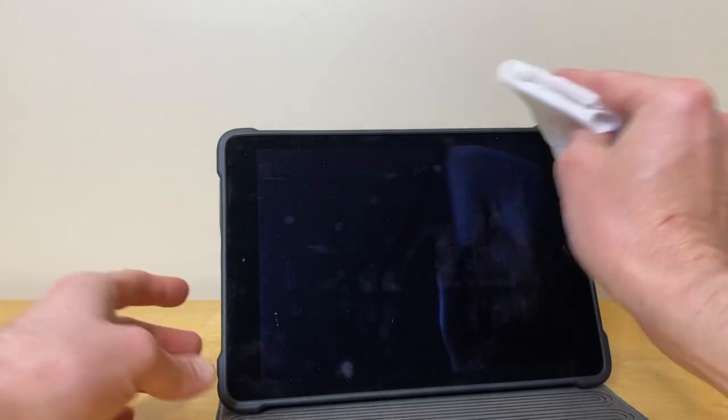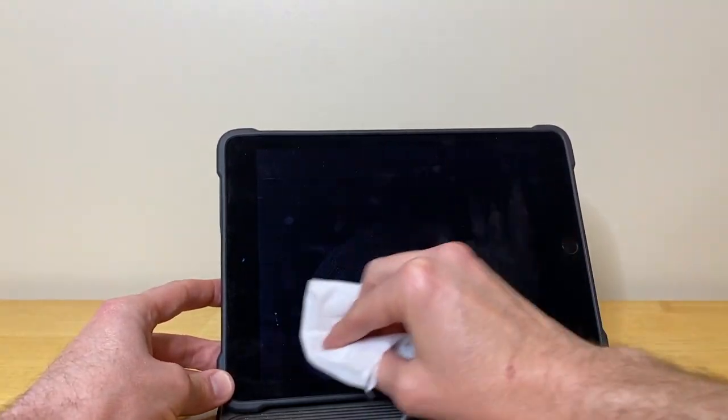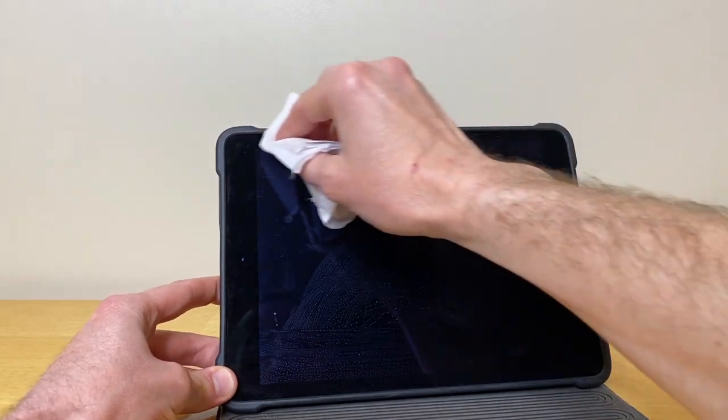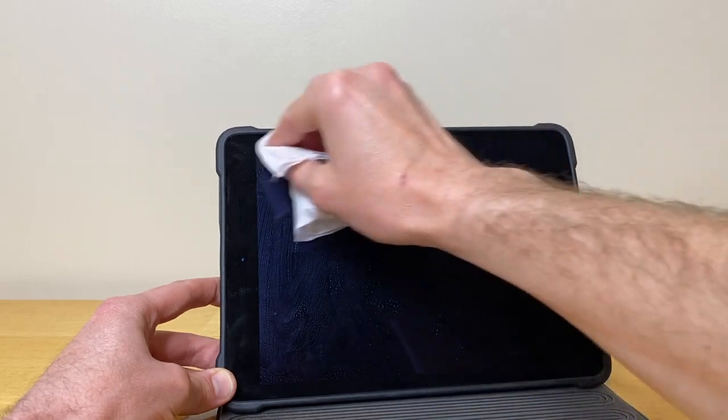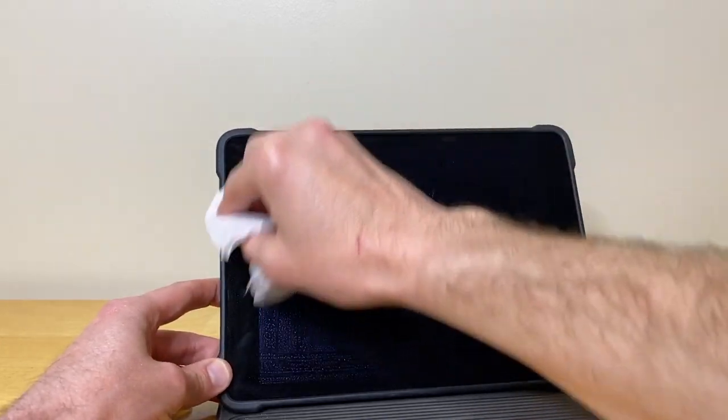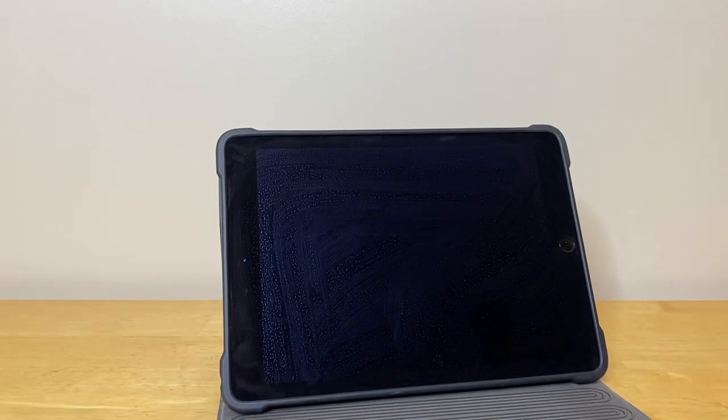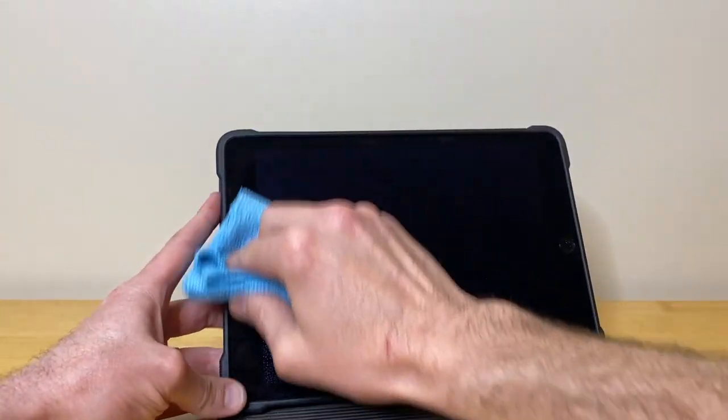In front of us now is an iPad, and I've got a Miracle Wipe. I'm just going to begin wiping all of those smudges off the screen. And don't apply any pressure. Just allow the weight of your arm and hand to wipe this clean. And it's pretty wet now. What we'll do is transition to the microfiber cloth. Same thing.